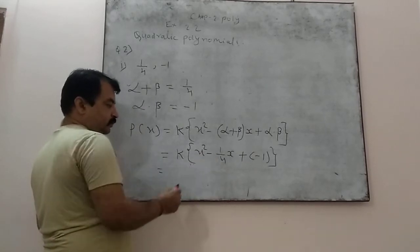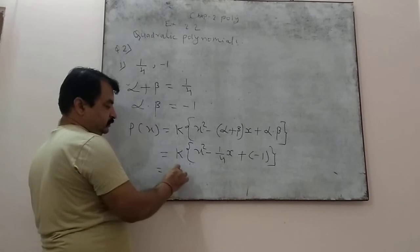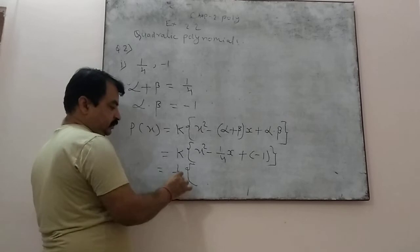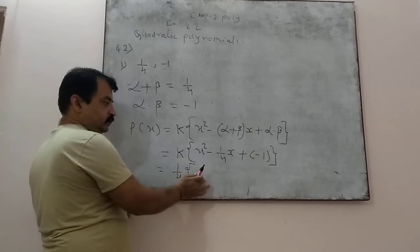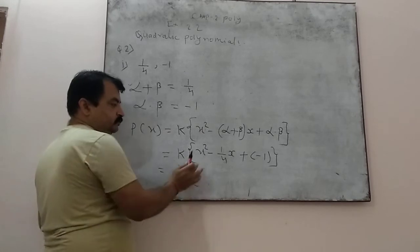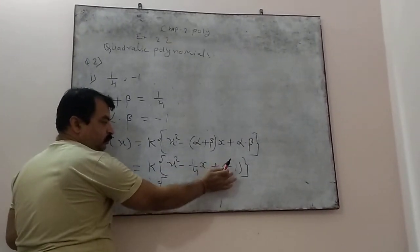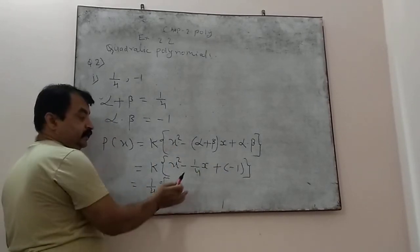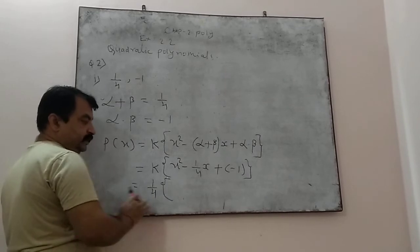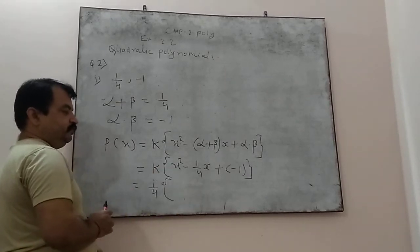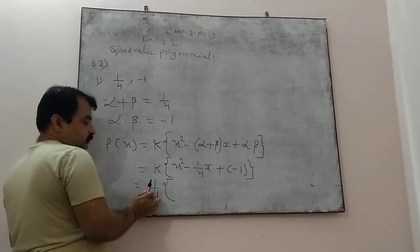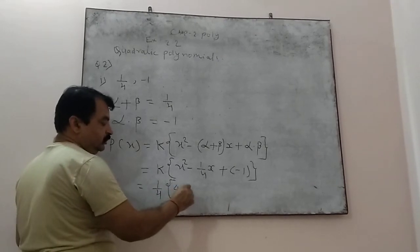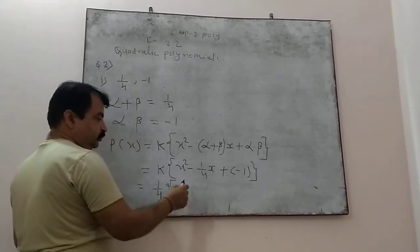Now you can take 1/4 out of the curly bracket as a constant. Since 1/4 is not common to all three terms, but we are taking it out to convert to standard form. To do this, multiply all three terms inside the bracket by 4 — the denominator value — so that the overall value of the expression does not change.